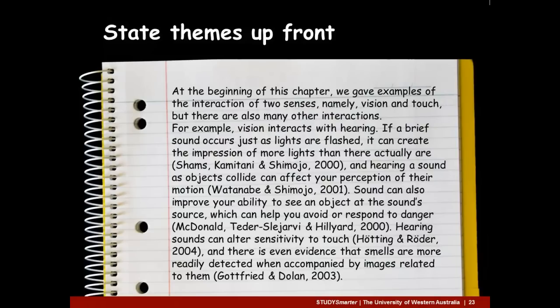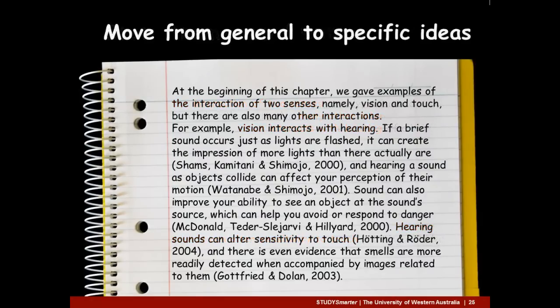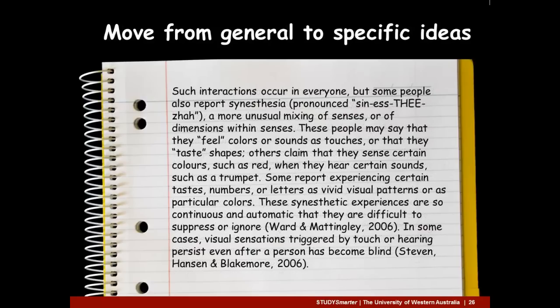Cohesive paragraphs begin by stating themes up front. This helps orient readers to what comes next. Take a look at this paragraph from Bernstein et al., the psychology textbook — remember, you can pause the screencast at any time. Did you notice that the first sentence suggests certain themes for the paragraph: the interaction of two senses and many other interactions? The sentences that follow discuss these interactions — for example, vision with hearing, and hearing with touch. We can also see that cohesive paragraphs move from general ideas to more specific ideas: from interactions in general to examples of these.